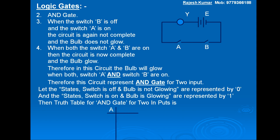This is input A, input B, and output Y. In the first case, when both switches are off — A is 0, B is 0 — Y is also 0, meaning the bulb does not glow. In the second case, A is 0 and B is 1, meaning switch A is off and switch B is on; the bulb again does not glow and output Y is 0.